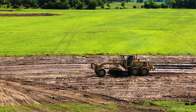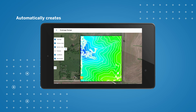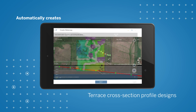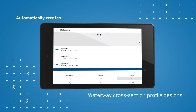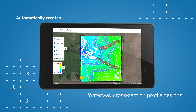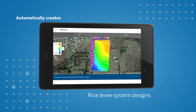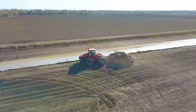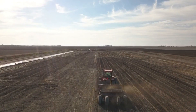Through an optional subscription service, WMSurvey2 also enables the design of certain surface drainage structures. With just an elevation map of the land, the app can automatically create wide-to-date terrace cross-section profile designs, waterway cross-section profile designs, rice levee system designs, and the 3D surface control files and navigational guidance lines needed by earth-moving equipment to implement the designs.